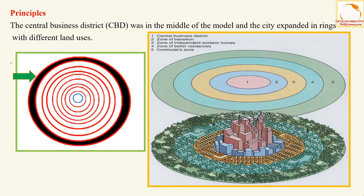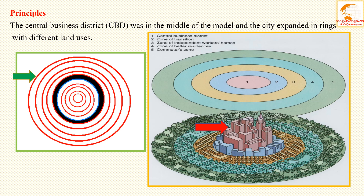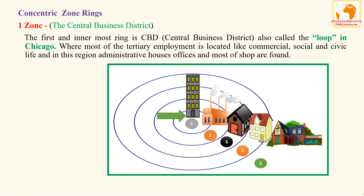Burgess created five zones according to land use: first, CBD; second, zone of transition; third, zone of independent workers' homes; fourth, zone of better residences; and fifth, commuter zone. The first and innermost ring is the CBD, also called the 'Loop' in Chicago, where most tertiary employment is located — including commercial, social, and civic life, administrative offices, and shops — and where urban transportation infrastructure converges, making it the most accessible zone.